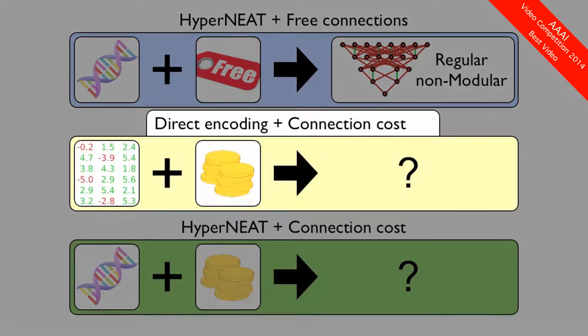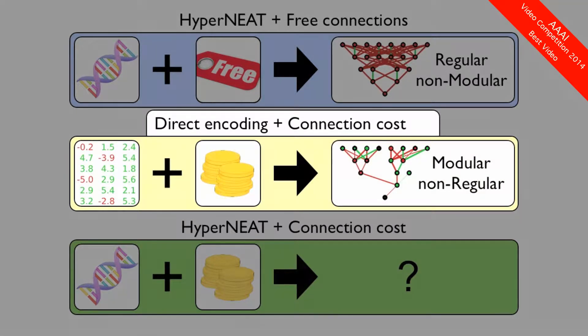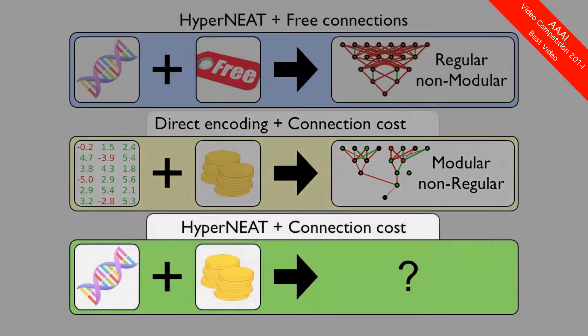Second, we tested the direct encoding with the connection cost on our problem. Again, the results were not surprising. Resulting networks were modular, but non-regular.